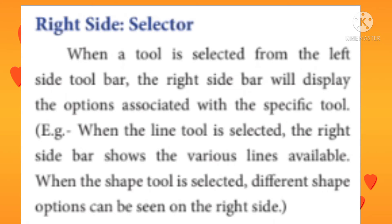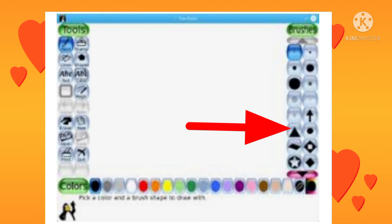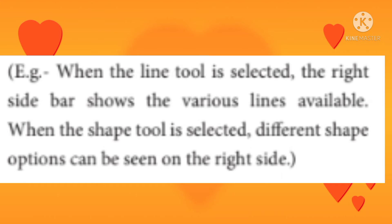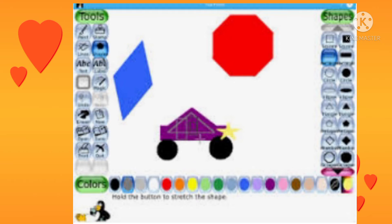Right side selector: When a tool is selected from the left side toolbar, the right side bar will display the options associated with that specific tool — including designs and varieties.